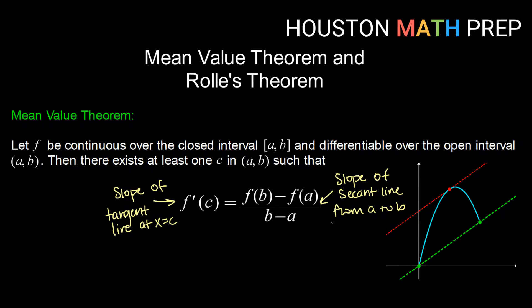We know that lines that share the same slope are parallel. So visually, this would mean for functions that meet the conditions of the mean value theorem, if you were to draw a secant line through the endpoints, there would be at least one parallel tangent line in that interval. So let's look at an example and see what that means.